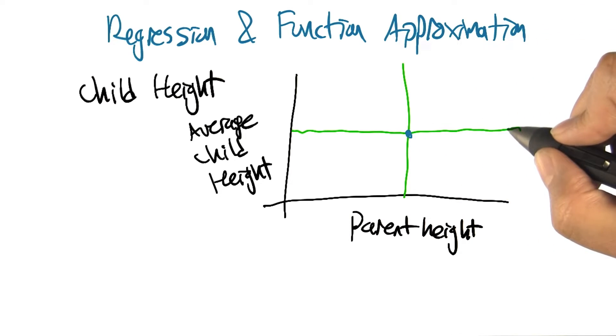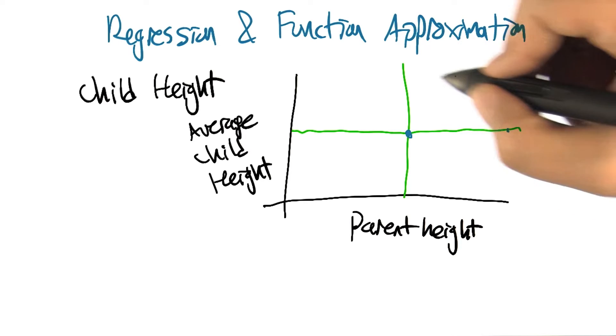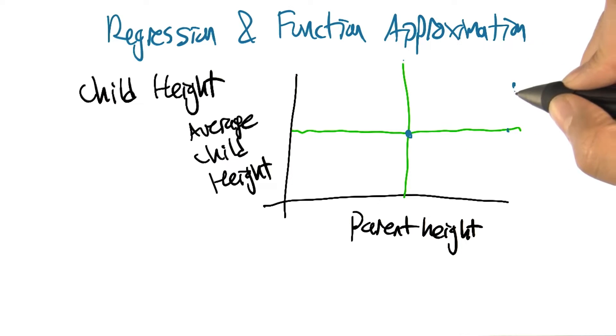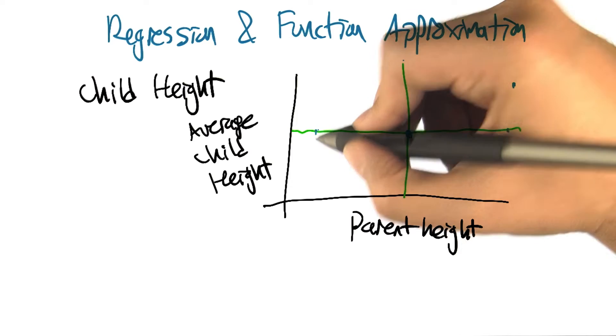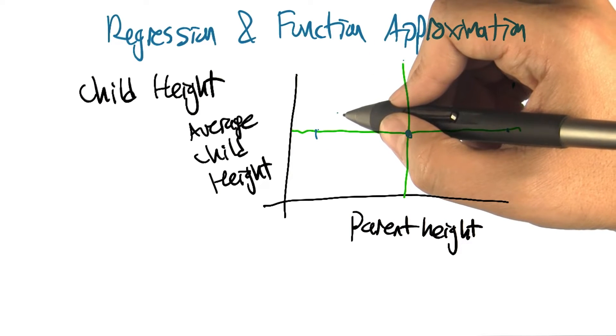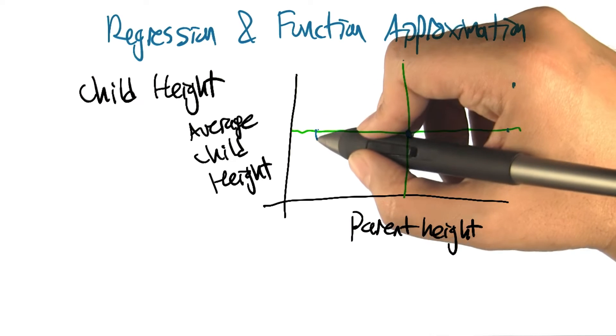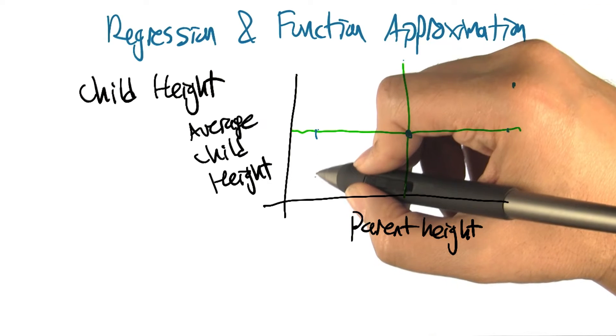But parents that are really tall, like that hypothetical person from before, will have children that are taller than average but not as tall as themselves. And similarly, people that are of smaller stature will have children that are also short but not quite as short. Again, closer to the mean.